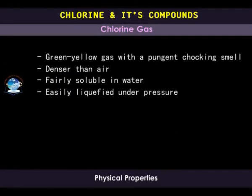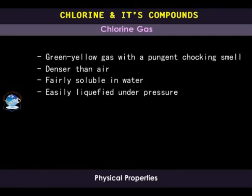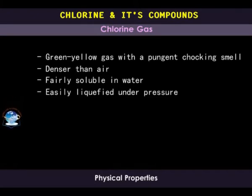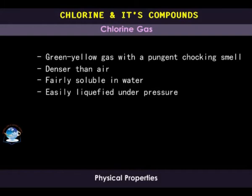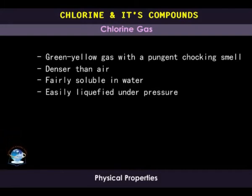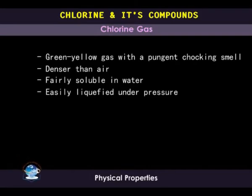Physically, chlorine is a greenish-yellow gas with a pungent choking smell. It is about two and a half times denser than air, and this explains why it is collected by downward delivery or upward displacement of air. It is fairly soluble in water, forming chlorine water, and it is easily liquefied under pressure.